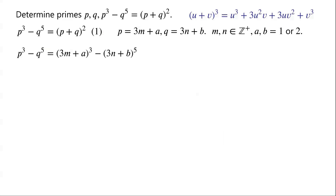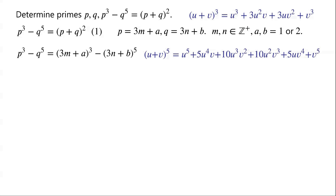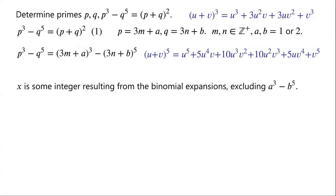We know that u plus v all cubed equals u cubed plus 3u squared v plus 3uv squared plus v cubed, and u plus v all to the power of 5 equals u to the power of 5 plus 5u to the power of 4 v plus 10u cubed v squared plus 10u squared v cubed plus 5uv to the power of 4 plus v to the power of 5. By applying these expansions, note that all terms include a factor of 3 except a cubed minus b to the power of 5. We let x be some integer from the binomial expansions excluding a cubed minus b to the power of 5, so p cubed minus q to the power of 5 equals x plus a cubed minus b to the power of 5. Clearly, 3 divides x.